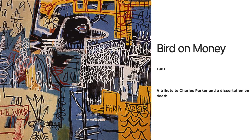The abstract shapes represent the jazz notes of Parker's often improvised songs. The work takes a darker tone when the viewer reads the words 'para morir' — to die — and Greenwood, a cemetery near where he was born and where he would be laid to rest seven years after he painted this work.